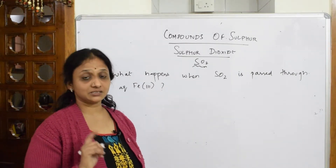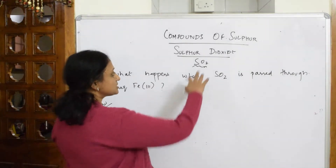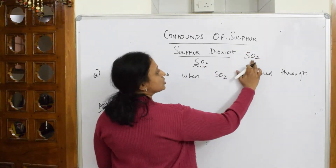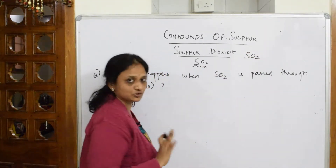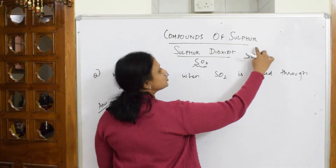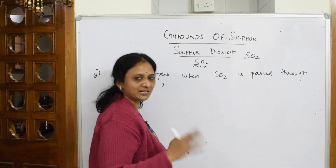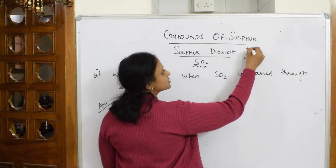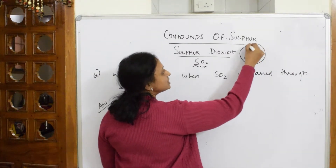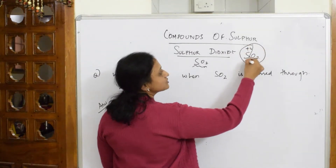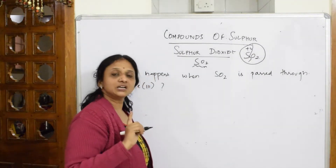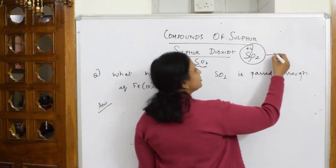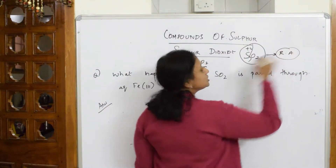We will first learn how sulfur dioxide acts as a reducing agent. When we look at its oxidation state — oxygen is minus two, and minus two into two is minus four — the oxidation state of sulfur is plus four. Whenever sulfur is in the plus four state, it is going to exist as a reducing agent.